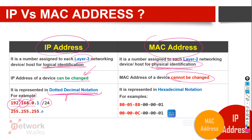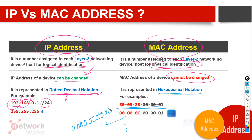MAC addresses are represented in hexadecimal notation — plain hexadecimal numbers. Between the numbers we can use a dash, a colon, or write it without separators. For example: 00-00-C0-00-01, or written as 000000C00001, or with colons like 00:00:C0:00:01.